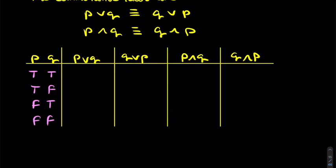The disjunction in column 2 is true if P is true, if Q is true, or if both are true. So anywhere you see a true in the first two columns, this will be true.